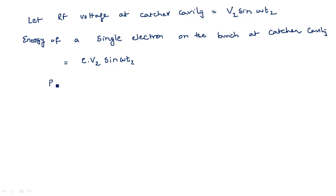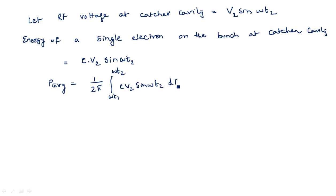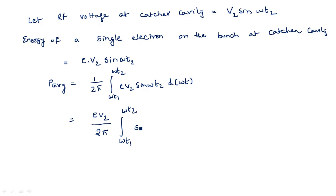The average power P_average is equal to 1/(2π) times the integral from ωt1 to ωt2 of e·V2·sin(ωt2) d(ωt). We are differentiating with respect to ωt because the phase is the variable here. The constant e·V2 comes out, giving e·V2/(2π) times the integral from ωt1 to ωt2 of sin(ωt2) d(ωt).